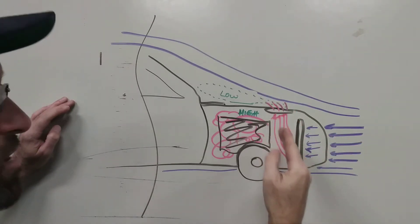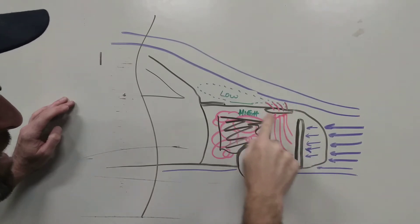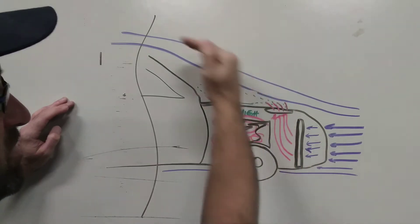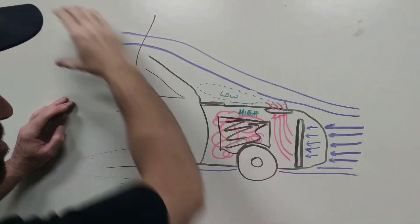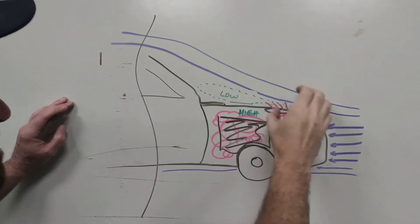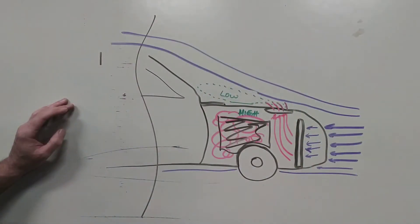It wants to naturally go up this way and with a hood louver in there it actually goes up and out and the flow of the car is going to potentially pick it up and actually draft it up over the car.